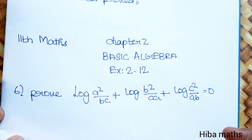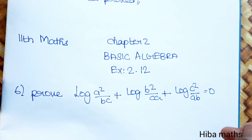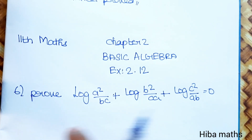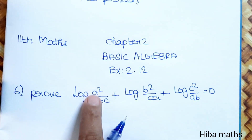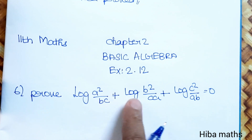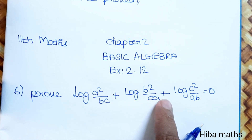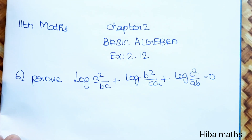Hello students, welcome to Hiba Max 11th Standard Max Chapter 2 Basic Algebra, exercise 2.12, 6th question. Prove that log(A² / BC) + log(B² / AC) + log(C² / AB) is equal to 0. I will prove it for you.